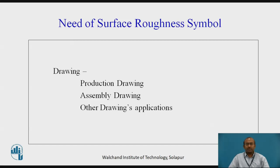Let us go with the next point of discussion: need of surface roughness symbol. As we had seen in general the various kinds of drawings, now let us particularly go with the type of drawings which we are going to learn in machine drawing. First, production drawing; second, assembly drawing; and third, many other drawings applications we are coming across, like the drawings used for maintenance and many more.